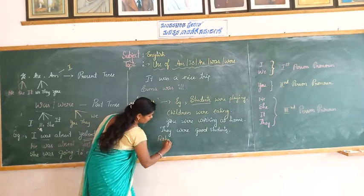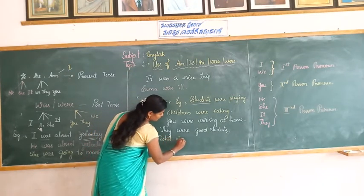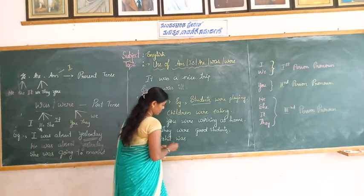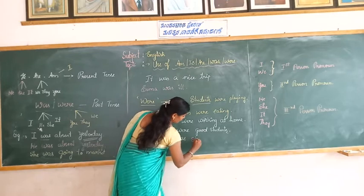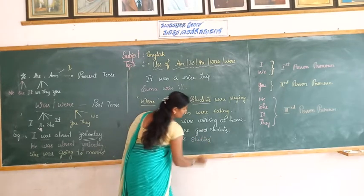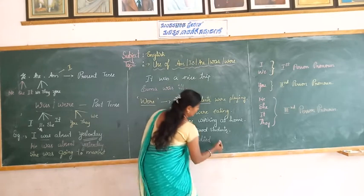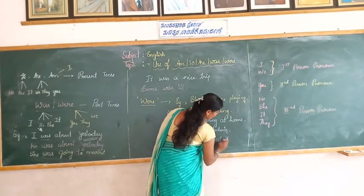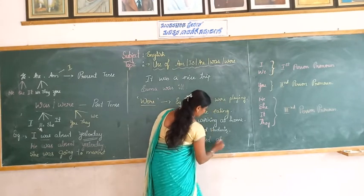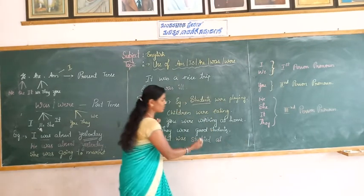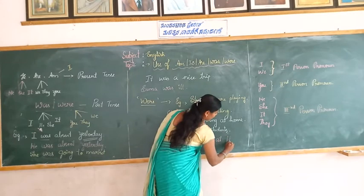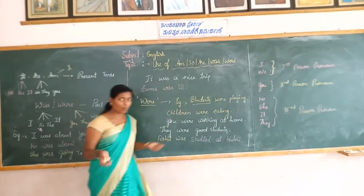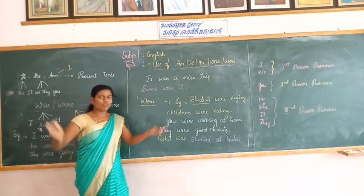Rohit was studying at a public school or college. He was studied — because 'Rohit' is a singular name, one person, so we use 'was'.